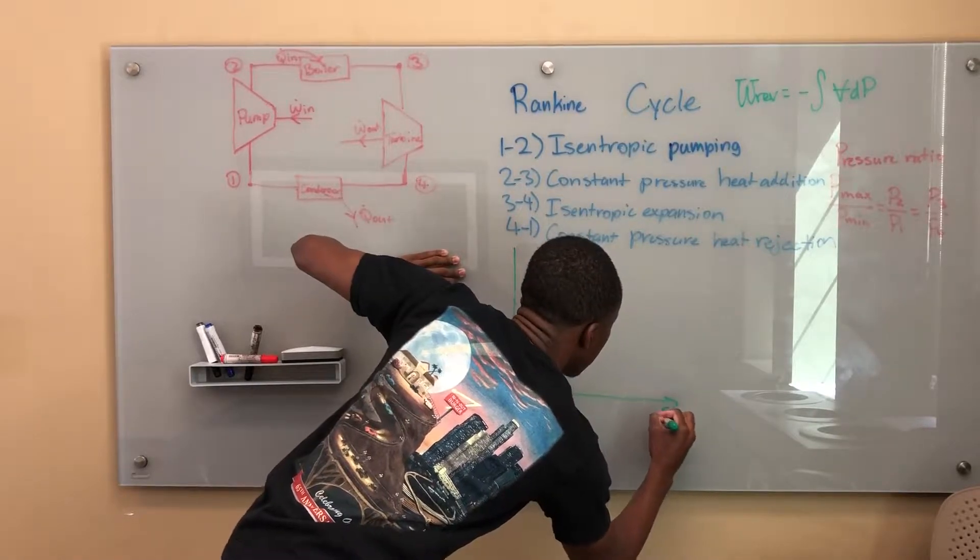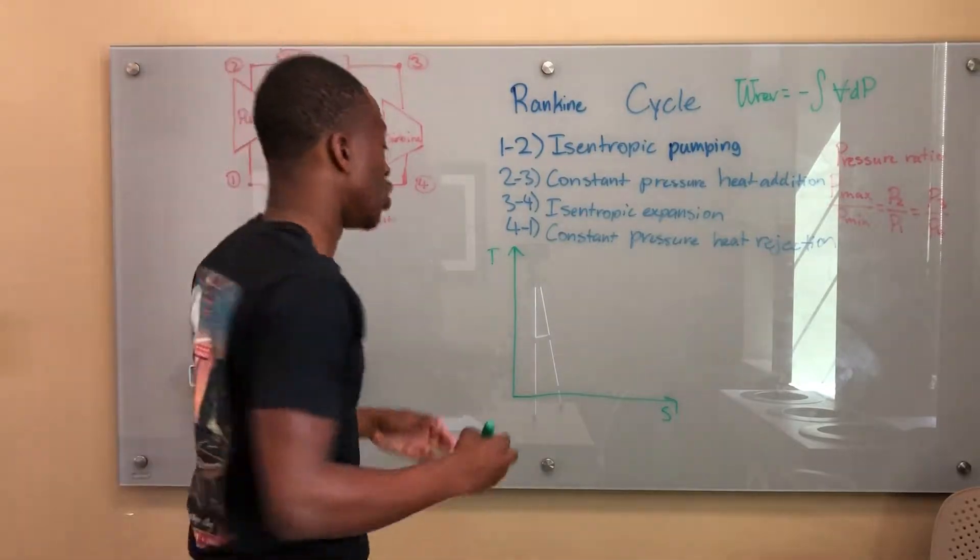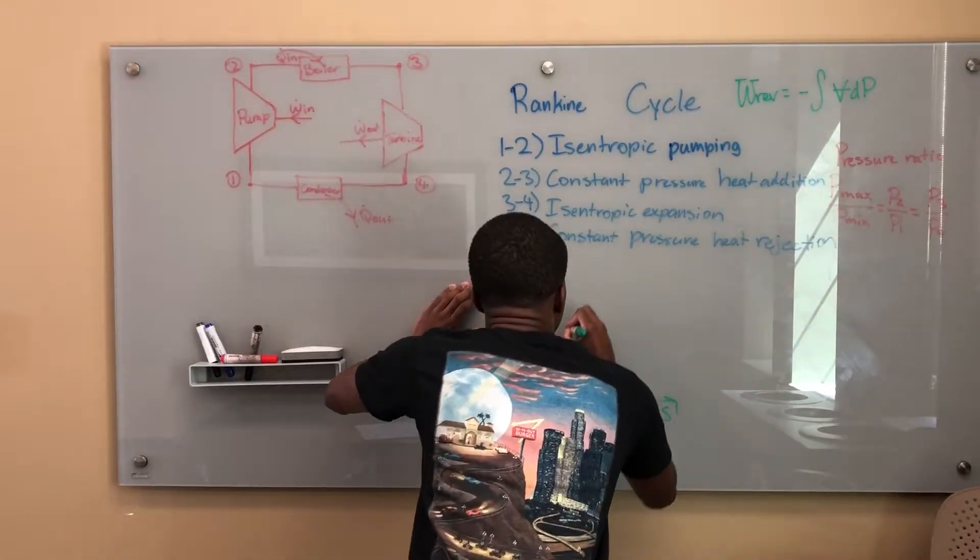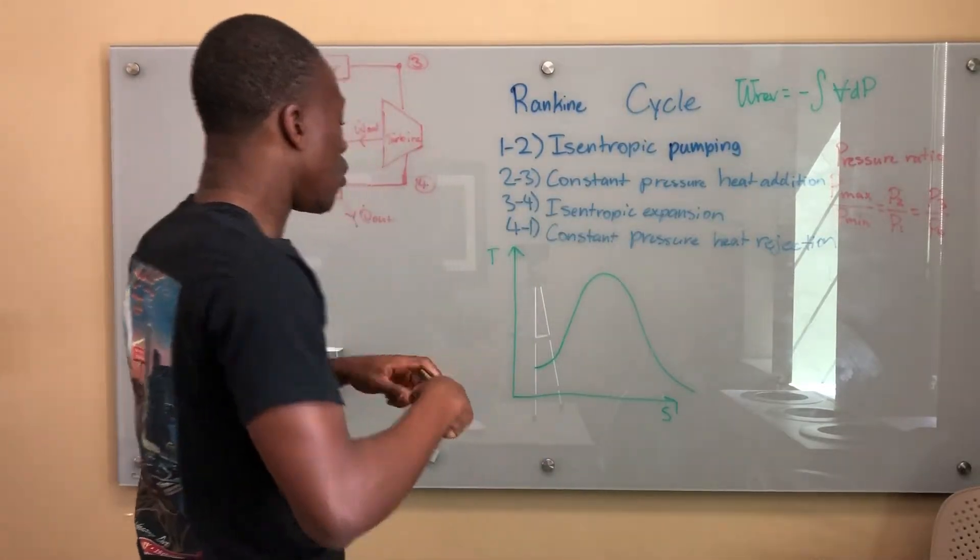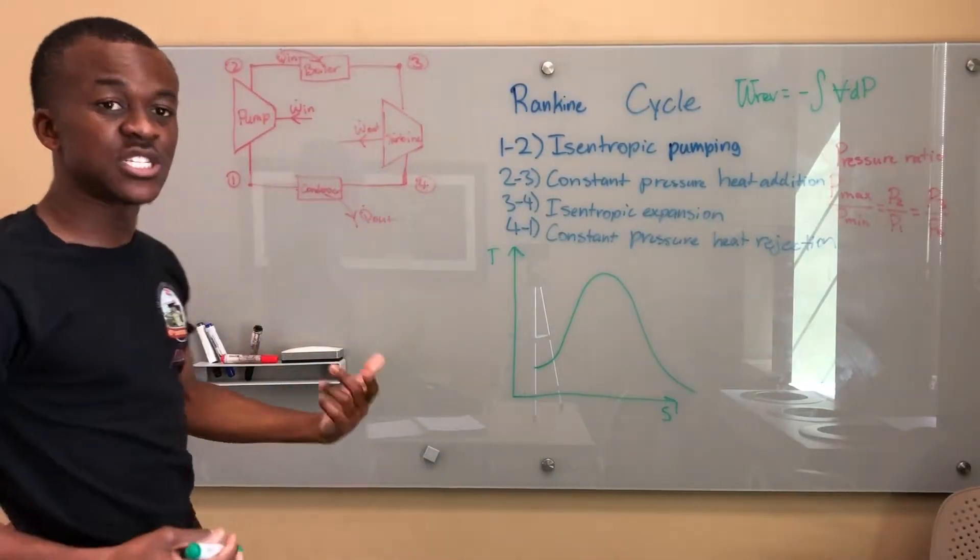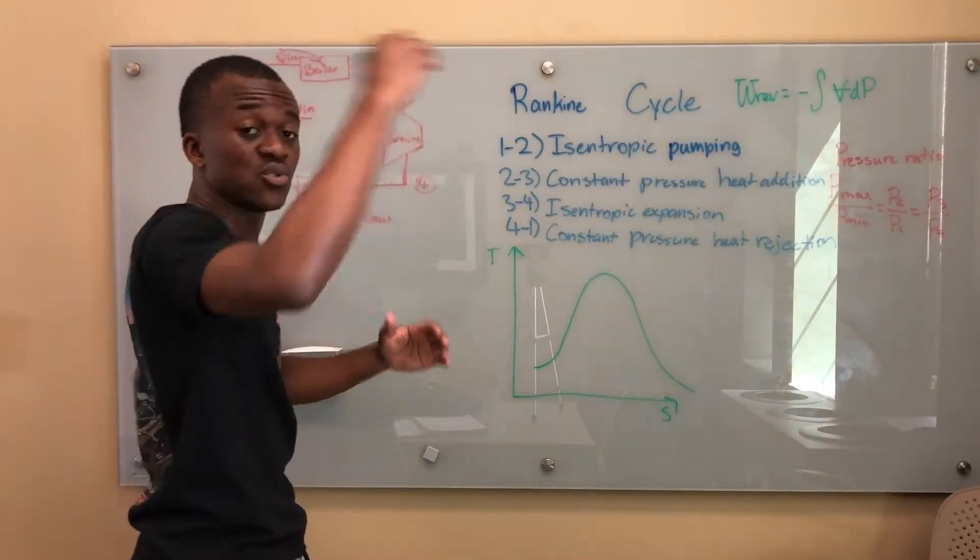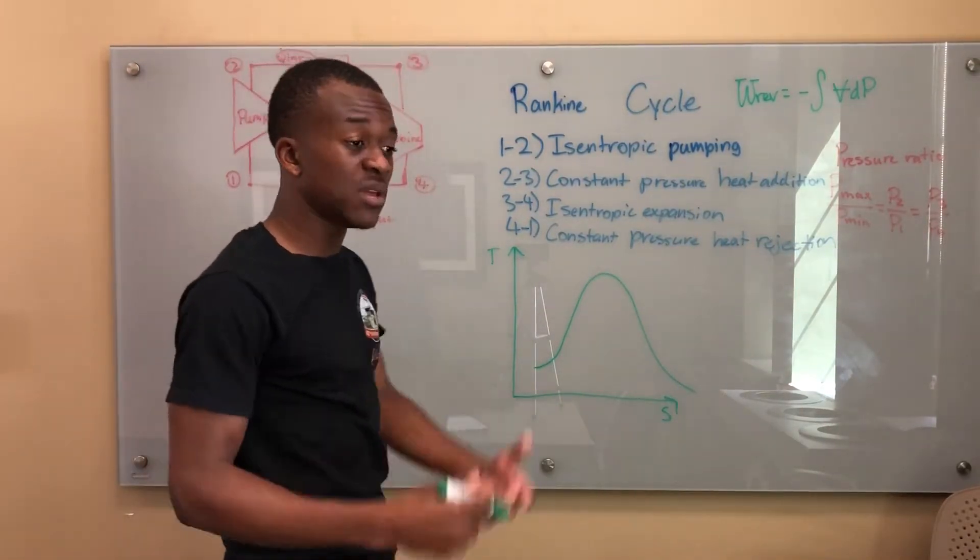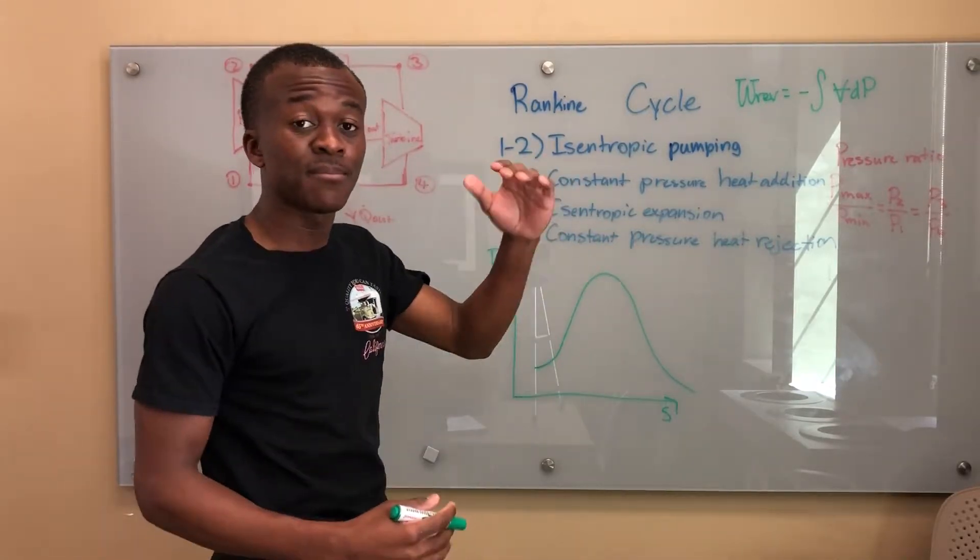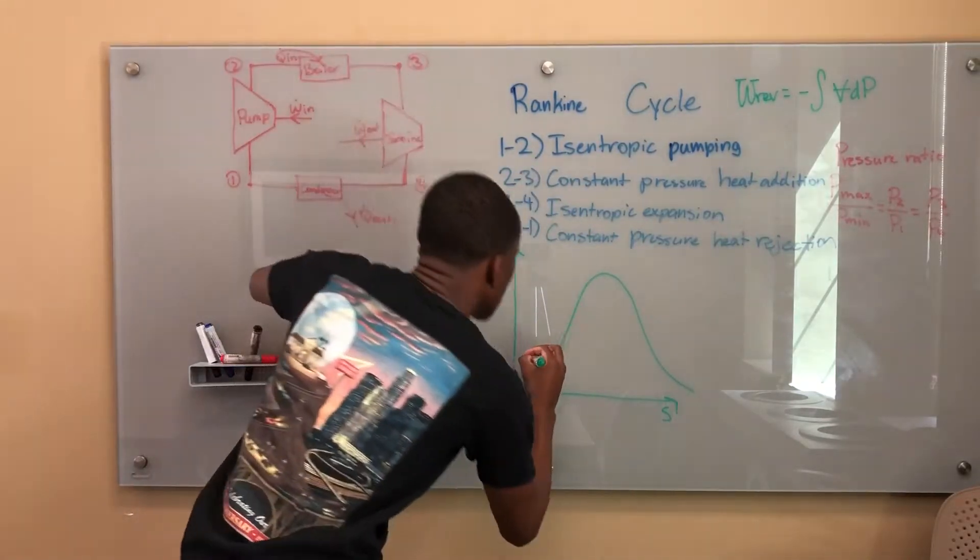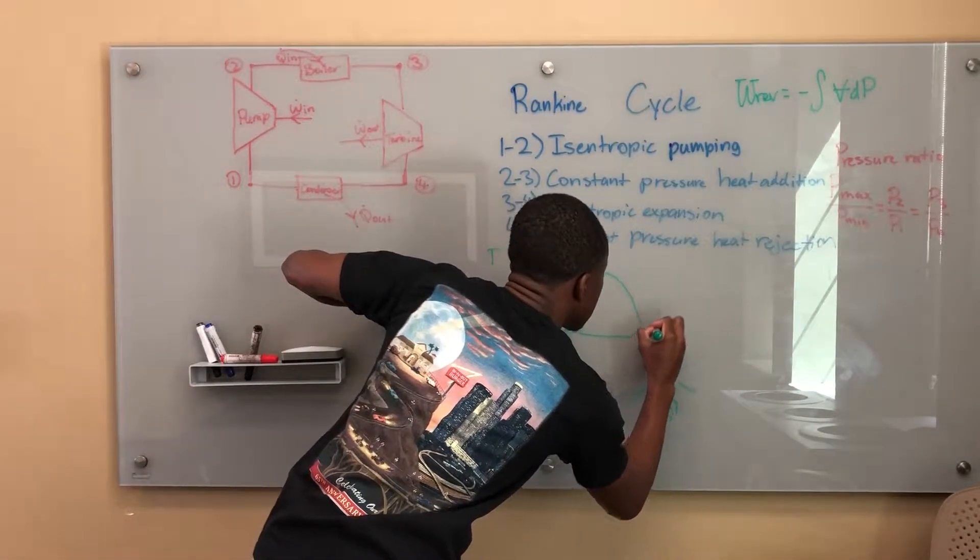So since we're dealing with a phase-changing substance, water, we have to draw our dome. So we're going to go ahead and draw our dome. And what you're going to do is you're going to have two different pressures that we're dealing with. Since we go from P1 to P2 to P3 to P4. But P1 and P4 are the same, P2 and P3 are the same. So we're going to have something that ends up looking like this.